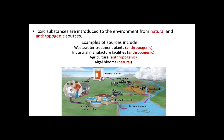Let's look at how substances like pharmaceuticals make their way into the environment. Upon use in households, or when they are directly thrown away in toilets or the sink, these drugs reach wastewater treatment plants. However, most treatment plants around the world do not have the technology to remove these substances from the treated wastewater, so they are discharged into surface waters like rivers and lakes.